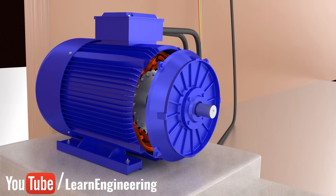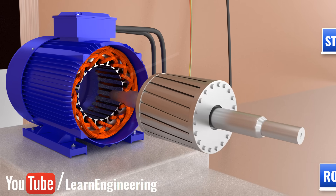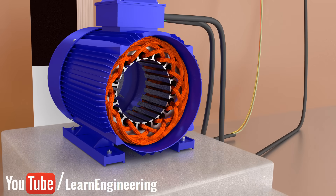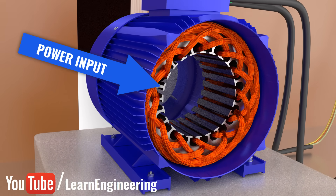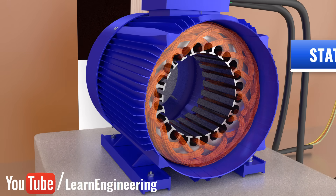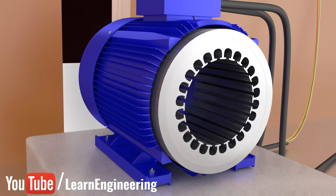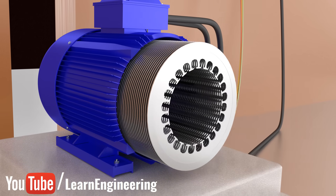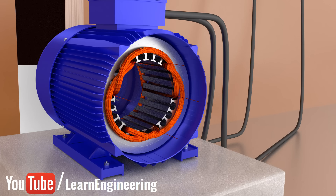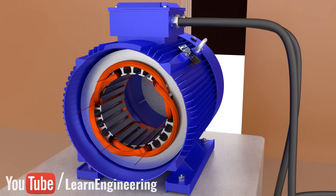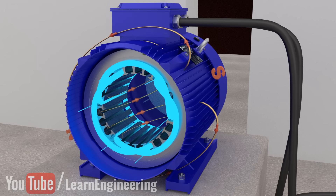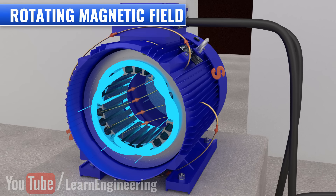The induction motor has two main parts: the stator and rotor. The stator is basically a three-coil winding and three-phase AC power input is given to it. The winding passes through the slots of the stator, which are made by stacking thin, highly permeable steel laminations inside a steel or cast-iron frame. When a three-phase current passes through this winding, something very interesting happens — it produces a rotating magnetic field.